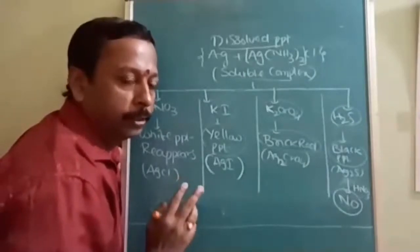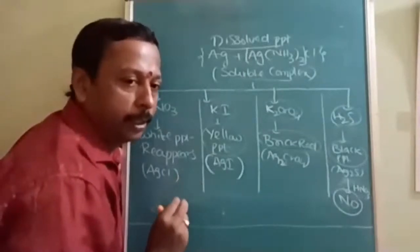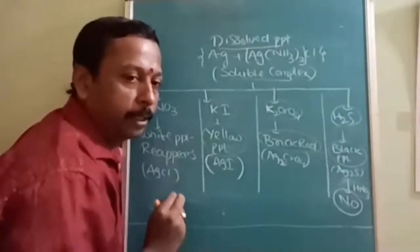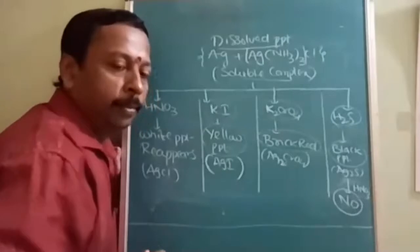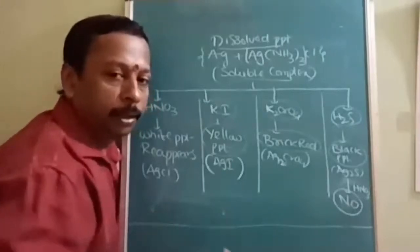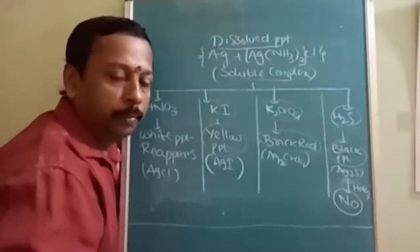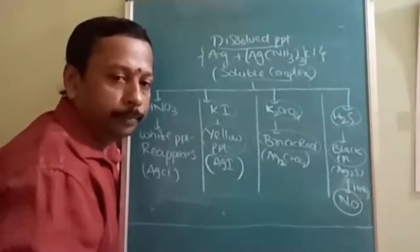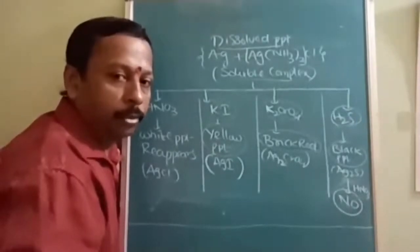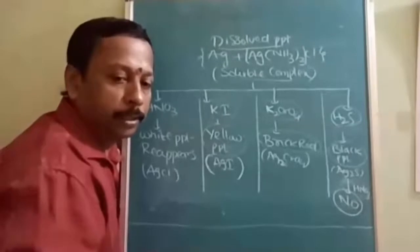So far, lead (Pb²⁺) and silver (Ag⁺) have been confirmed. The remaining Group 1 radical to identify is Hg₂²⁺ (mercurous ion). The confirmatory test for mercury will now be studied.